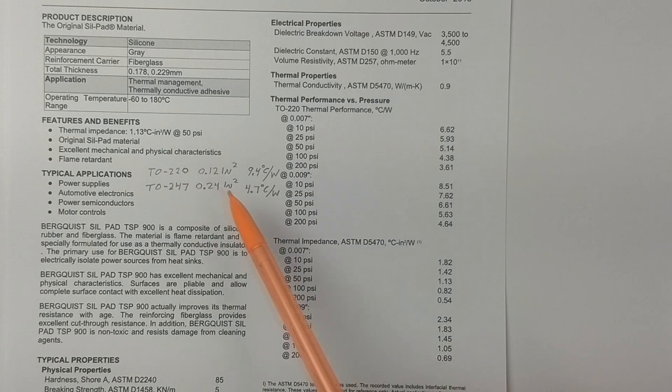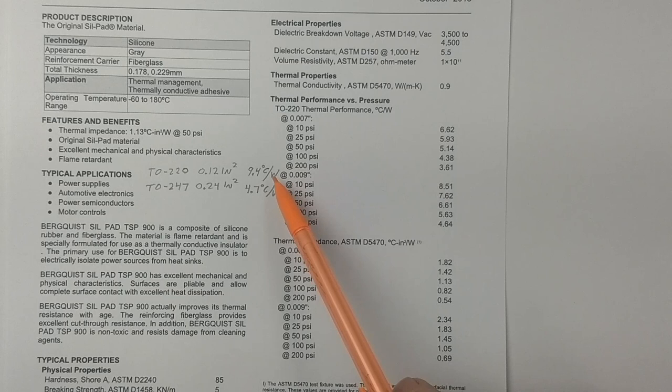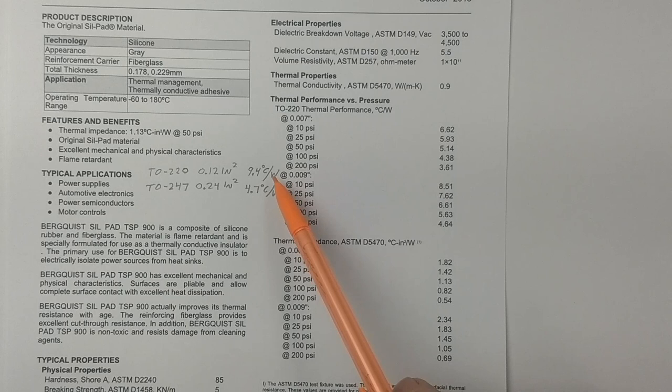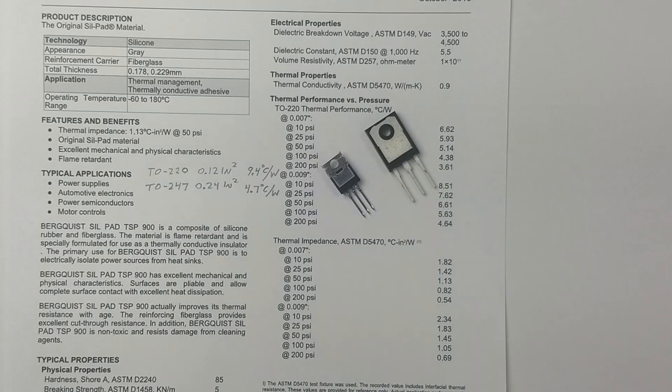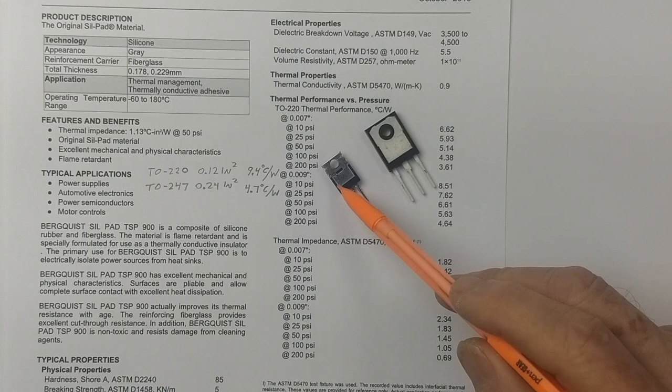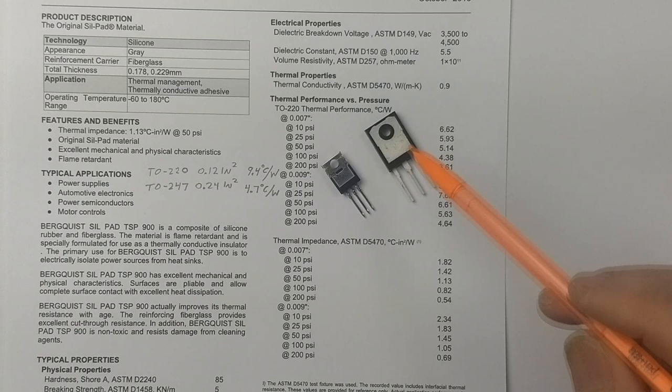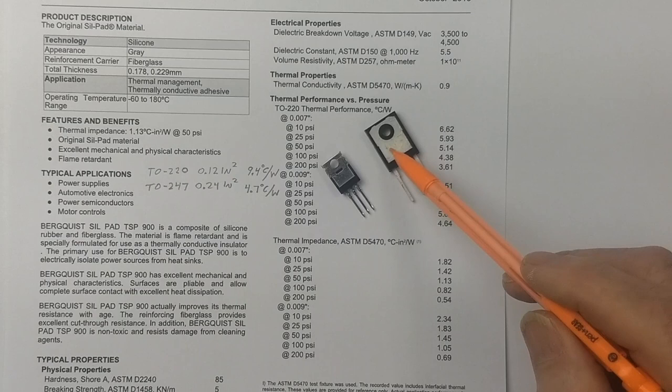Now earlier, we said that the TO220 has an effective area of 0.12 square inches. So if we put that into this formula, we end up with 9.4 degrees C per watt. And we saw what only a half a degree C per watt can do to a design. Now here's a TO220 transistor, and the only thing that counts is the metallic area.